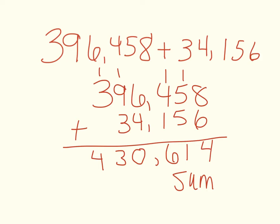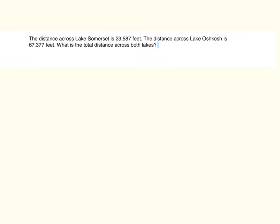Alright, our next step is we are going to focus a lot in this unit on word problems. So we'll go ahead and read this one out loud. We're going to highlight important information, and then we're going to do the calculations. The distance across Lake Somerset is 23,587 feet. The distance across Lake Ashkosh is 67,377 feet. What is the total distance across both lakes? I'm going to go back and highlight the important information. The word 'total' lets us know that we are going to use the math operation of addition, so we're going to add those numbers.